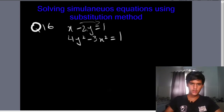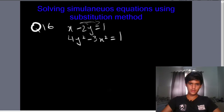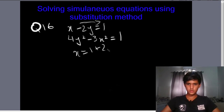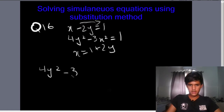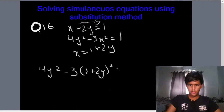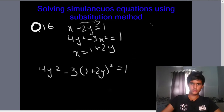We are going to take minus 2y to the other side of the equation, so x is equal to 1 plus 2y. Then we substitute this into the second equation: 4y squared minus 3 times (1 plus 2y) squared is equal to 1.